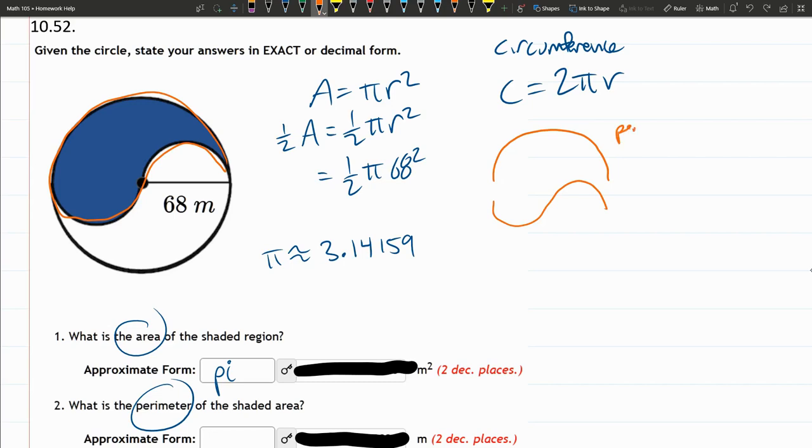So this perimeter, let's just call it Pb for the big perimeter, the big part. This is going to be one-half times 2 pi r. 68 is the radius here.